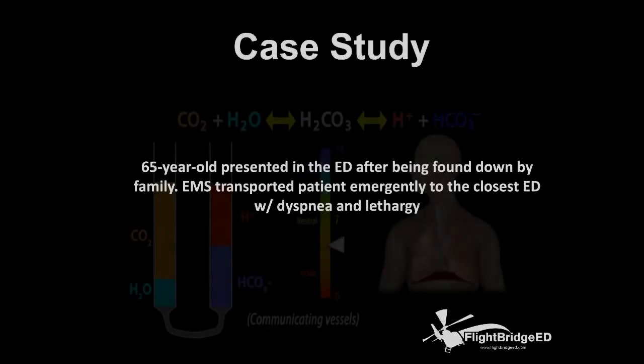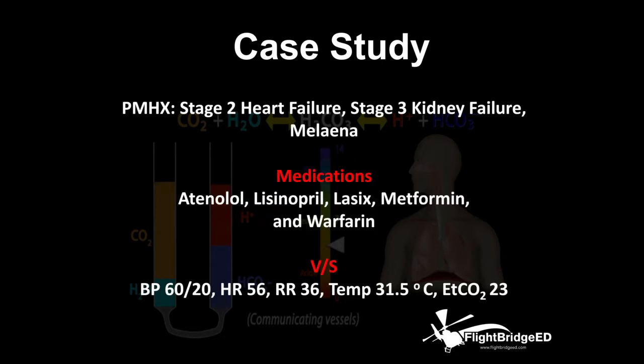Here's our case. A 65-year-old male presented in the ED after being found down by family. EMS transported this patient emergently, Priority 1, to the closest emergency department. He had some shortness of breath, was visibly working hard to breathe, and was very lethargic. His past medical history encompassed heart failure, stage 3 kidney failure, and he's had blood in his stool over the last 3 to 4 weeks. Current medications: